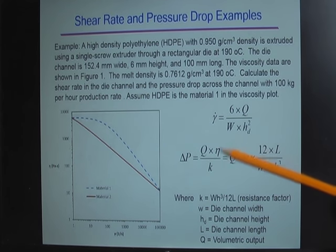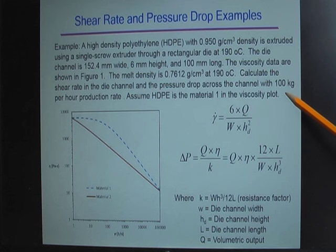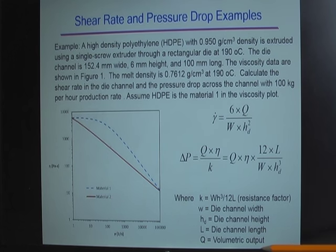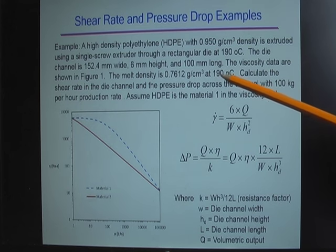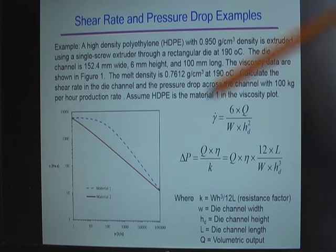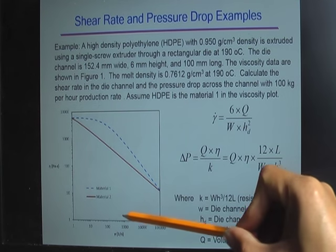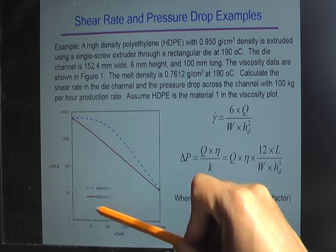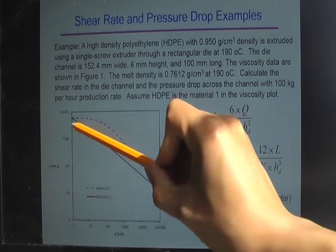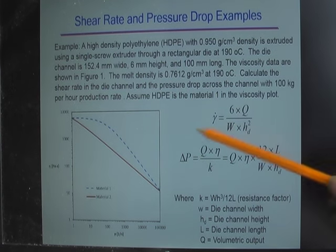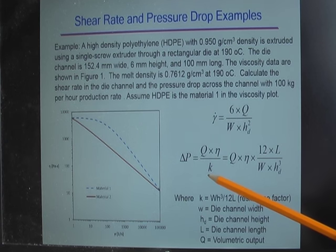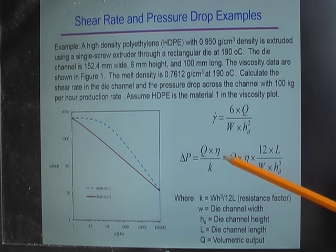A hint: the equations use Q, which is volumetric output, but you're given 100 kg/hr as mass flow rate. You need to convert it to volumetric output using the melt density of 0.7612 g/cm³ at 190°C. Once you convert 100 kg/hr to volume, plug it into the shear rate equation — the result should be around 40 s⁻¹. Then estimate the viscosity at that shear rate and temperature, and plug your numbers into the pressure drop equation. I'll upload the full solution to D2L.